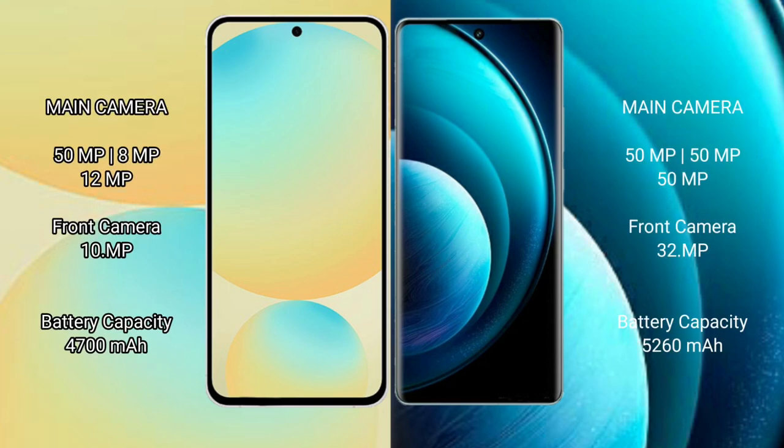Samsung Galaxy S24 FE features a rear triple camera setup of 50MP plus 8MP plus 12MP, with a 10MP front camera. Vivo X100 Pro features a rear triple camera setup of 50MP plus 50MP plus 50MP, with a 32MP front camera.